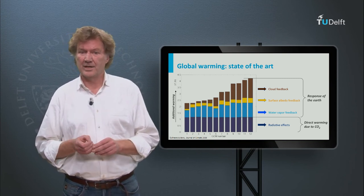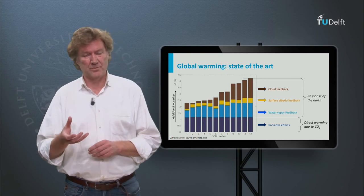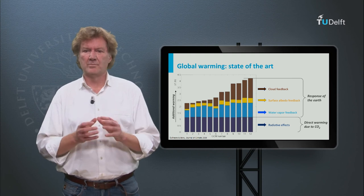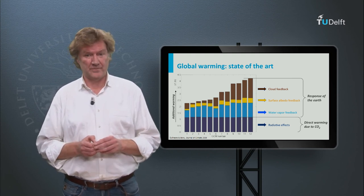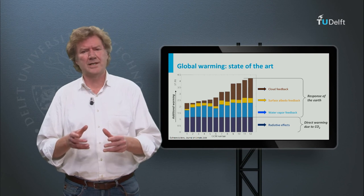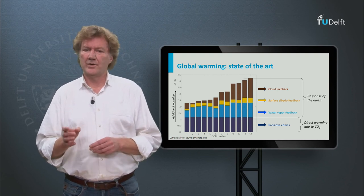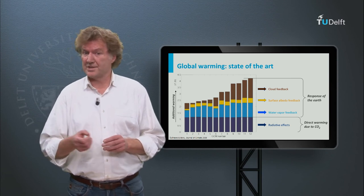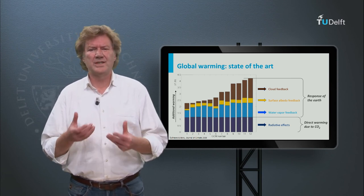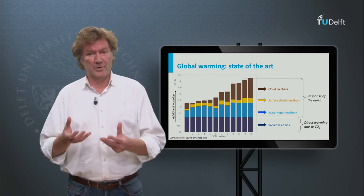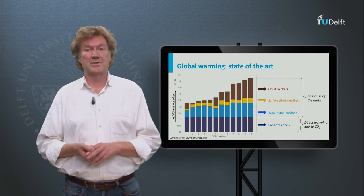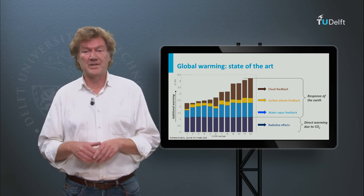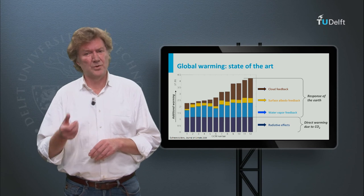The models differ, however, in how they calculate the Earth system's response to this warming. We will get more water vapor in the atmosphere, but models give slightly different values for the additional warming — varying between 0.5 and 1 degree. The Earth will also reflect less solar radiation, for instance due to the melting of ice, leading to a few tenths of a degree more warming. The models differ most significantly in how they calculate the cloud response — while some say clouds have no impact at all, others estimate an additional warming of 2 degrees.